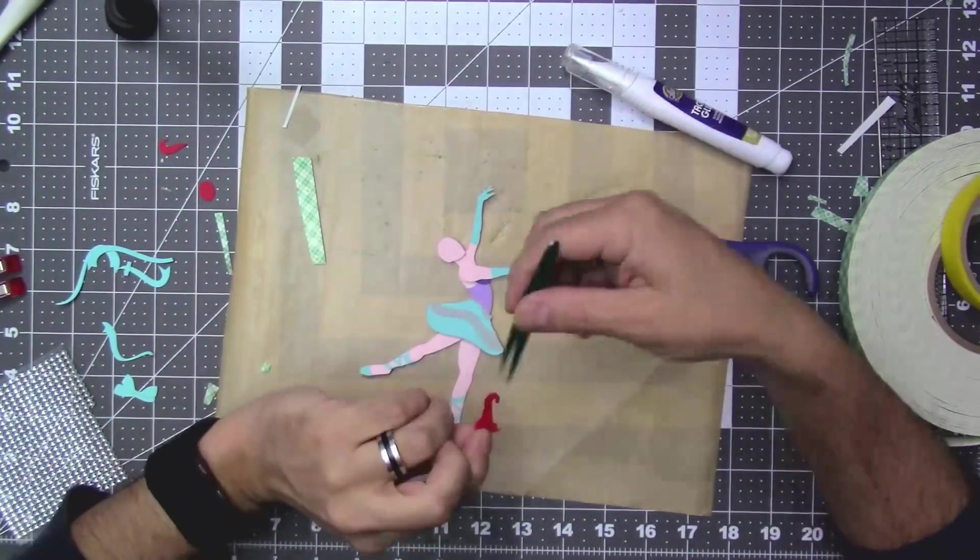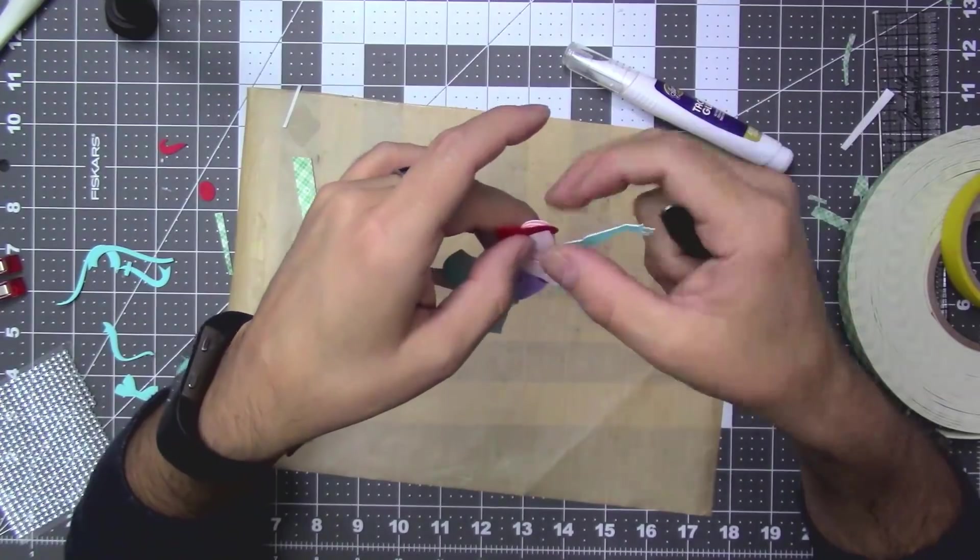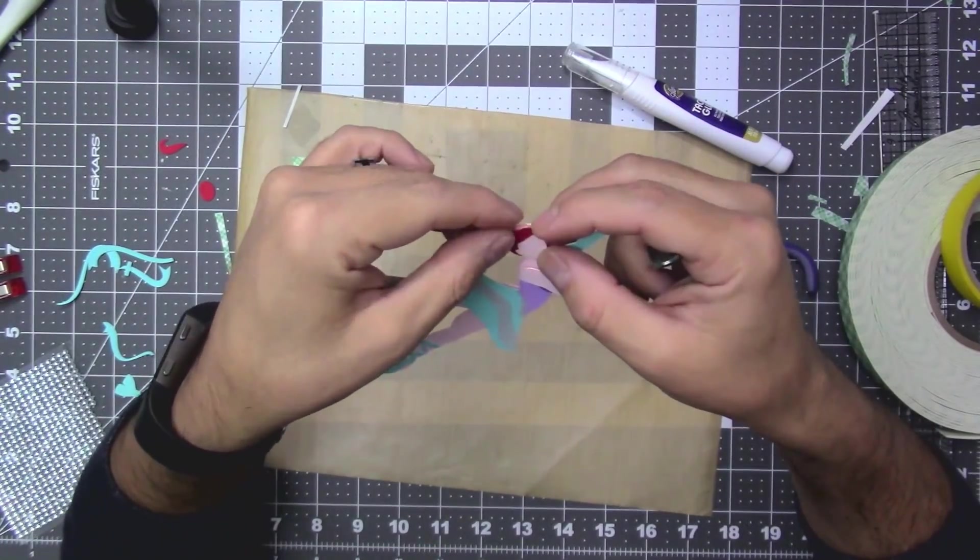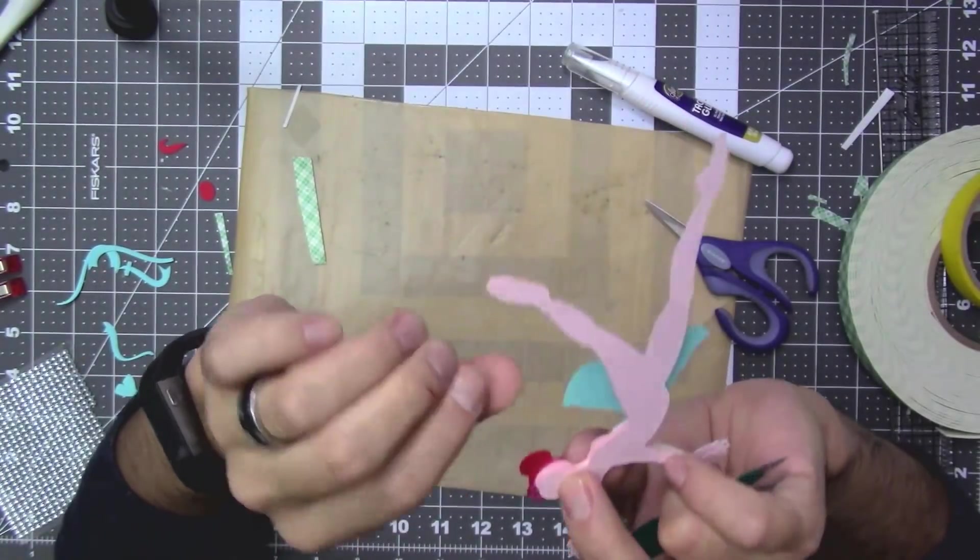Now start working on the hair. Add a thin line of glue to the lower part of the hair, the main hair piece, and glue it to the head.